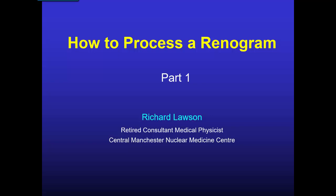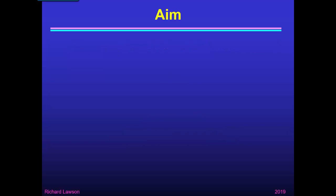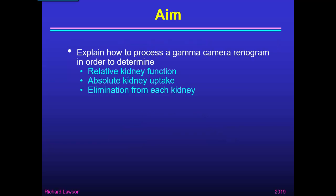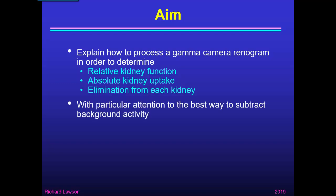This is the first part of my talk about how to process a renogram. The aim is to explain how to process a gamma camera renogram in order to determine three things: first, the relative kidney function of the left kidney compared with the right kidney; secondly, absolute kidney uptake, which determines whether the kidneys are normal or poorly functioning; and thirdly, elimination of urine from each kidney into the bladder. During the talk, I shall pay particular attention to the best way to subtract background activity, which is a very important part of renogram processing.